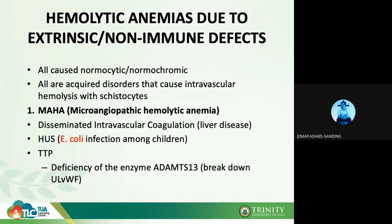Thrombotic thrombocytopenic purpura (TTP) is due to deficiency of the enzyme ADAMTS13, which breaks down von Willebrand factor — a coagulation factor. Deficiency of ADAMTS13 leads to coagulation, forming fibrin clot-like threads in blood vessels. When RBCs pass through these thread-like structures, they are fragmented into pieces — forming schistocytes.